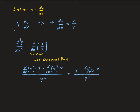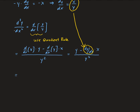Since we want the second order derivative, we substitute our first derivative dy/dx equals x over y into this expression. Doing that, we have y minus (x over y) times x, all divided by y squared. That gives us y minus x squared over y, all divided by y squared.